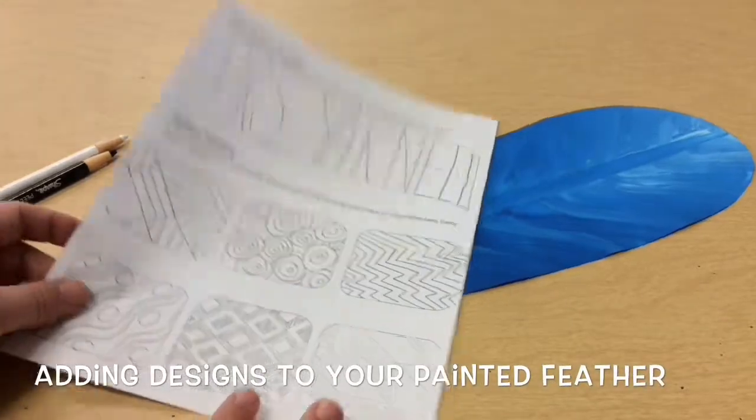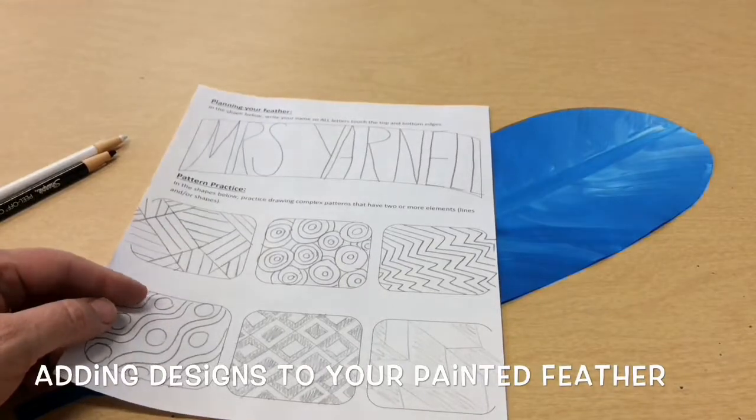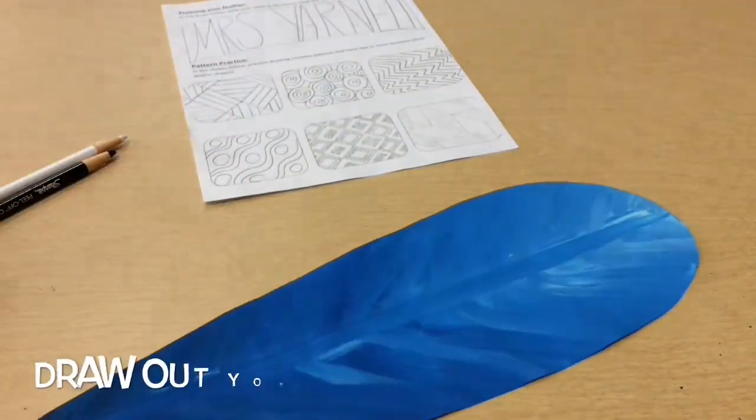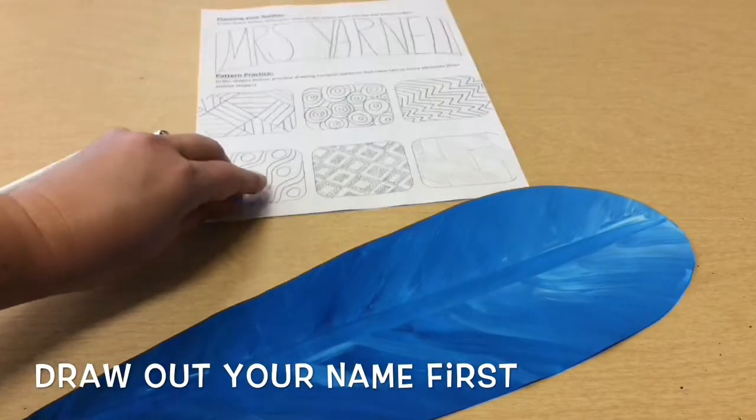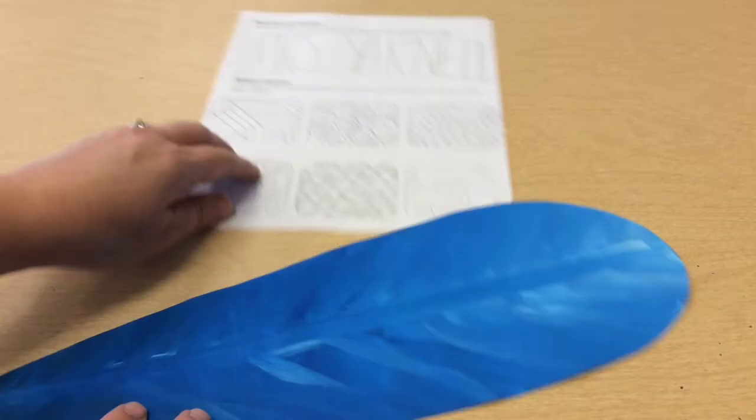Now that you have cut out your feather shape from your painted paper and you've completed your planning sheet, it is time to begin. The first thing you're going to want to do is get your name on your paper, and you can pick whatever side you want to write your name.